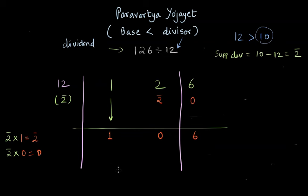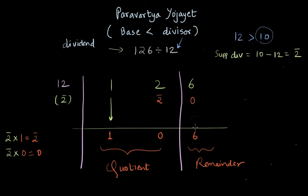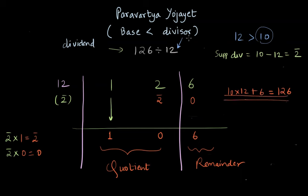We can verify: quotient times divisor plus remainder equals the dividend — 10 times 12 plus 6 equals 126. This confirms our answer. This is how we perform Paravartya Yojayet, wherein the base is less than the divisor and the supplement divisor is negative — an important point with this method.